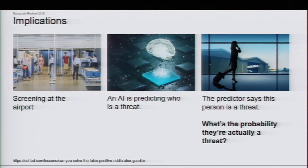Now let's change the story. I'm screening at the airport. I have a detector and it says a particular person is a threat. What's the probability this person is actually a threat? We can change the story to any of the applications we're going to talk about with AI — image detection and image analysis — contexts that are increasing and growing in both military and civilian applications.